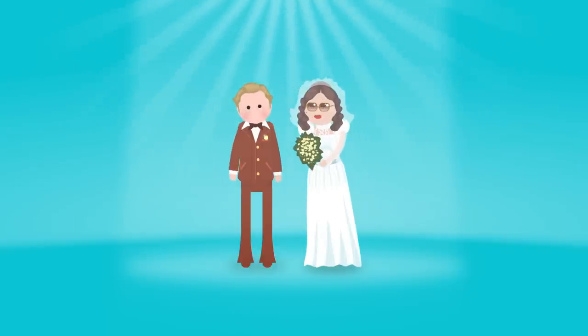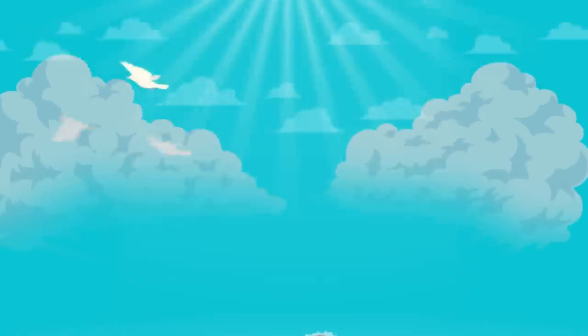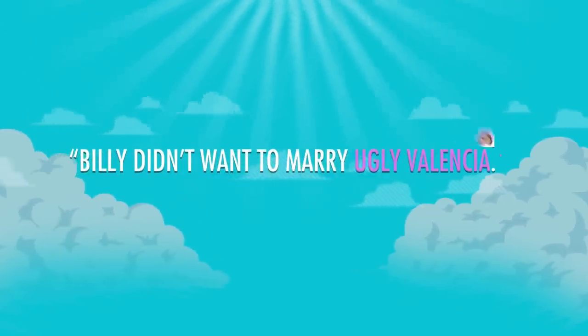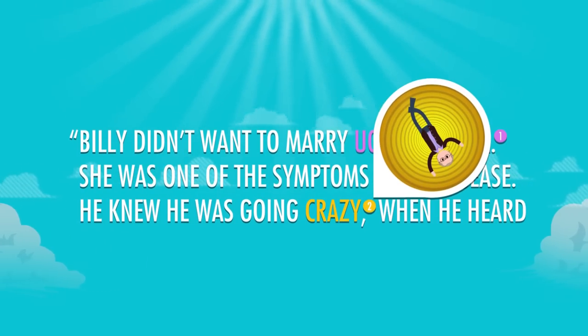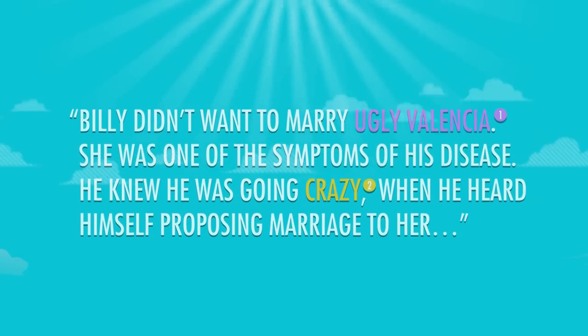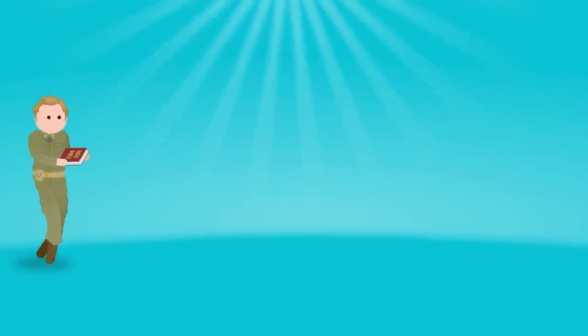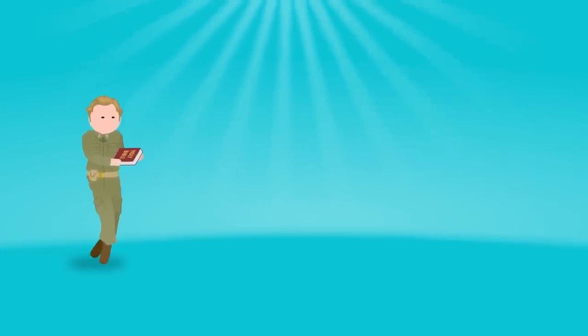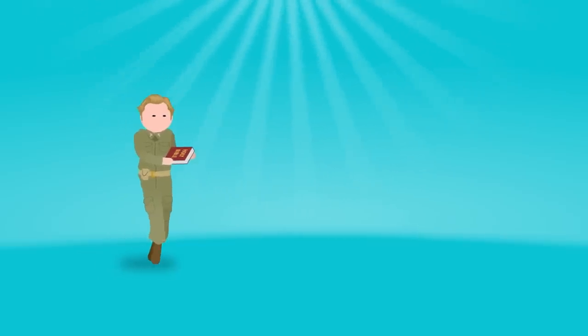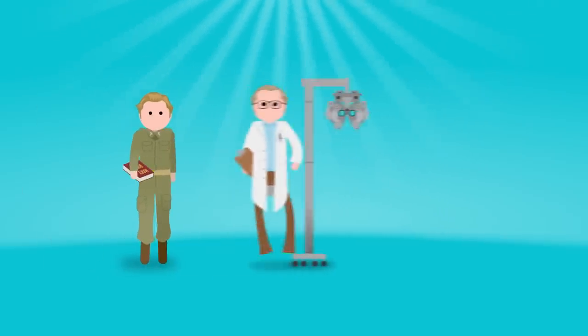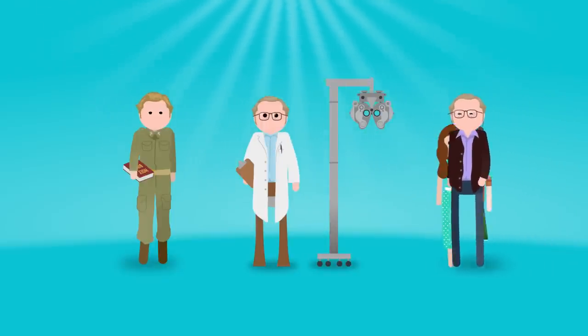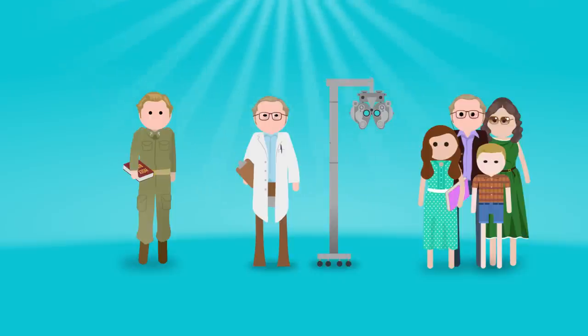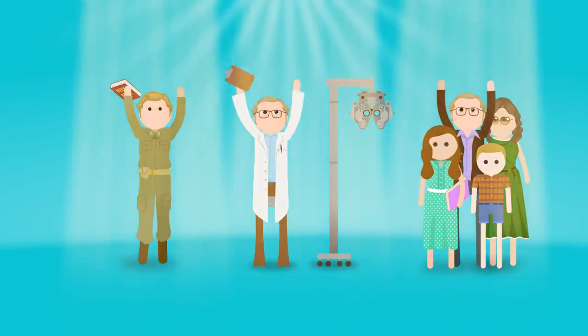In Slaughterhouse Five, Pilgrim makes some problematic life decisions. His choice of a marriage partner, for one, is not particularly inspired. Billy didn't want to marry ugly Valencia. She was one of the symptoms of his disease. He knew he was going crazy when he heard himself proposing marriage to her. Yet, his life choices aren't particularly immoral. He served as a chaplain's assistant in the war, a role in which he is, quote, powerless to harm the enemy or help his friends. He works as an optometrist, a job in which he helps other people to see better. He supports his family, a role in which he is a provider. So why would Pilgrim want to be absolved of moral responsibility?